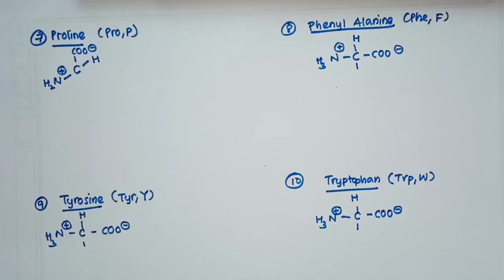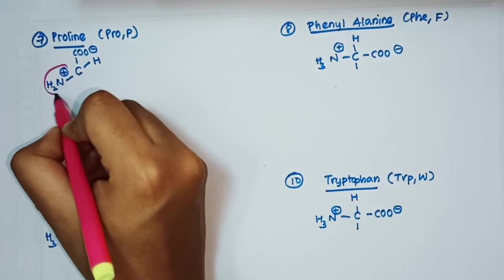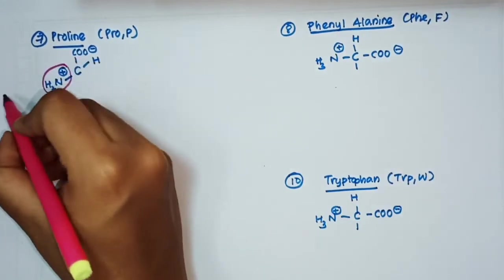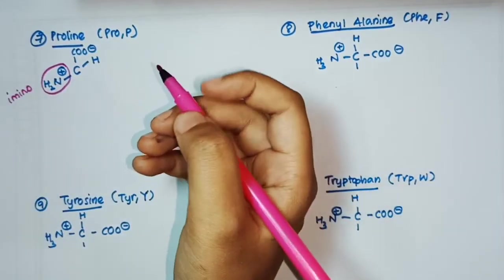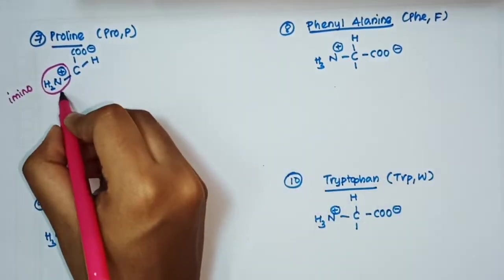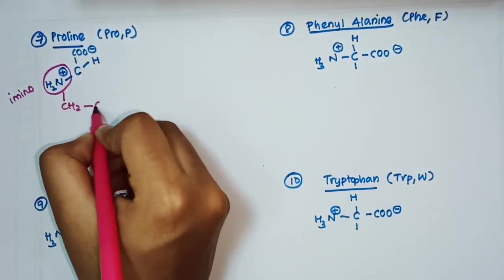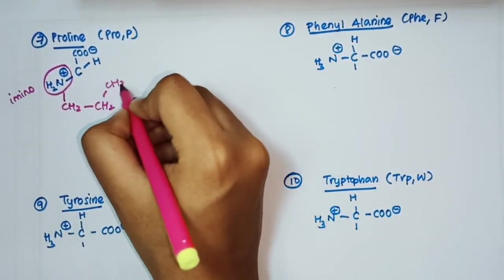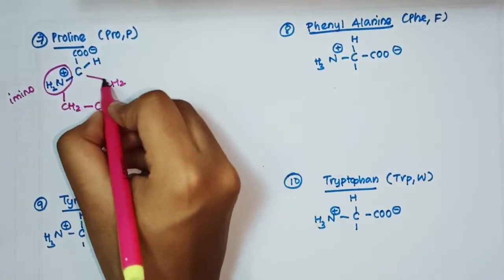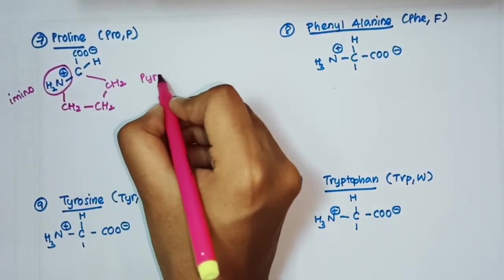The seventh amino acid is proline. Here a secondary amino group is present, and the R group forms a ring structure known as the pyrrolidine ring, making proline unique among the standard amino acids.